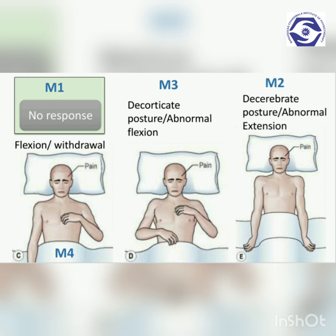Abnormal flexion with a score of 3 is recorded if the patient responds to painful stimulus by bending the elbow with adduction of the upper arms and abnormal posturing of the wrist and fingers, otherwise known as decorticate posturing. Abnormal extension to pain with a score of 2 is recorded if the patient responds with rigid extension — straightening of the elbow and hyperpronation of the forearm — otherwise known as decerebrate posturing, indicating spastic hand and wrist movements with inward rotation of the shoulders and forearms. A motor response of 1 is recorded when sufficient painful stimulation has been applied but no detectable movement is observed.